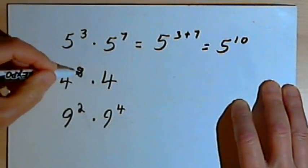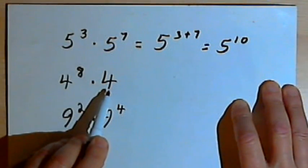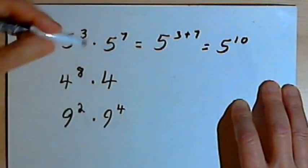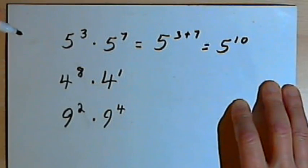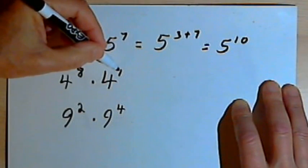Here I've got 4 to the eighth power times 4. If you have a number without an exponent, it basically means you've just got one of those numbers. So this is 4 to the first power. If you don't see an exponent, you can write a 1 as the exponent.